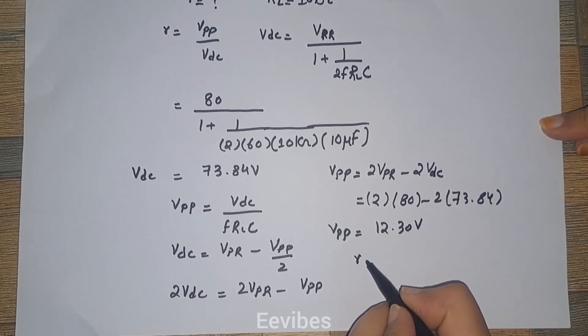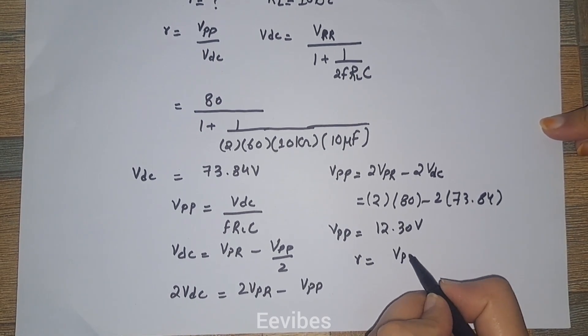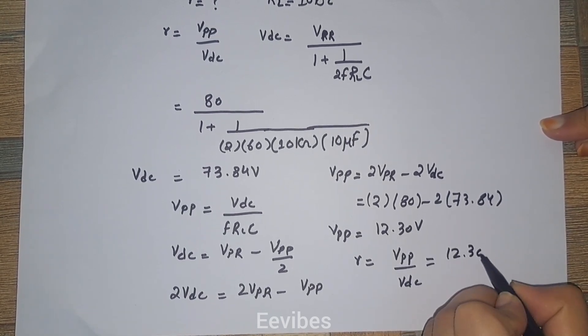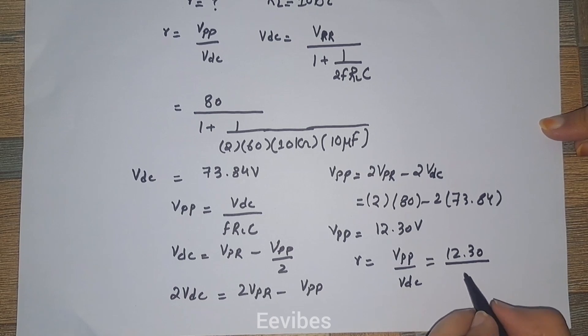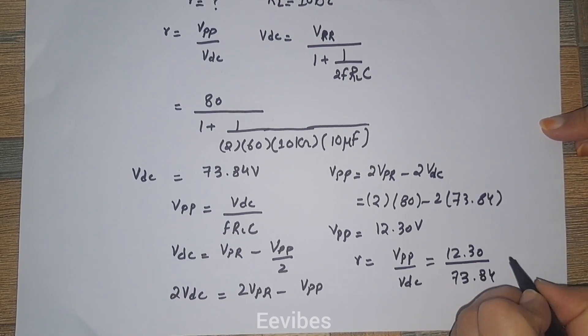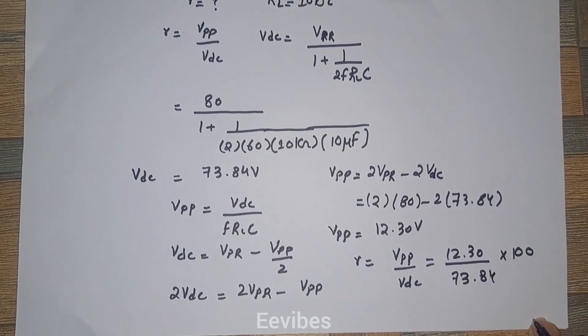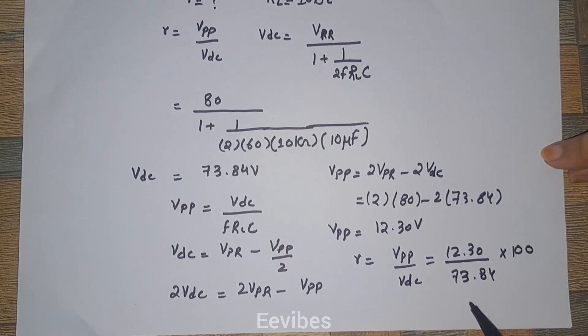We know that the ripple factor R is given as V peak to peak divided by V DC. So 12.30 divided by V DC which is equal to 73.84 volts multiplied by 100 will give you the value of ripple factor 16.65%.